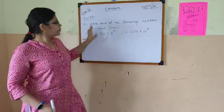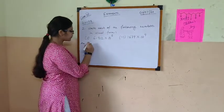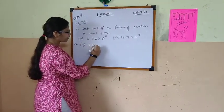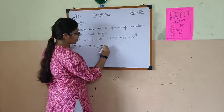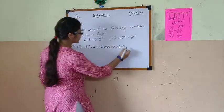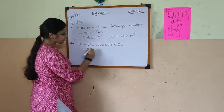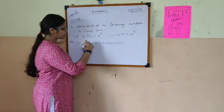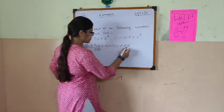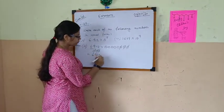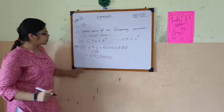Now next we have number 2 which says write each of the following numbers in usual form. We have 6.912 into 10 to the power 8. So instead of 10 to the power 8 I can write 8 zeros: 1, 2, 3, 4, 5, 6, 7, 8. And for removing the decimal point, 3 digits means we can write 1000 here, 3 zeros, and the decimal point gets removed. So 3 zeros and 3 zeros will cancel, and this will give us 6,912 then 1, 2, 3, 4, 5 zeros. So the usual form is 691,200,000.